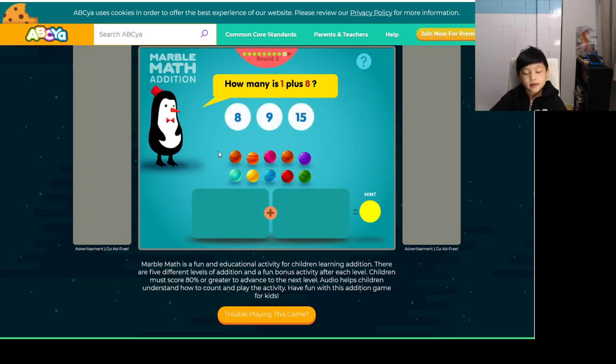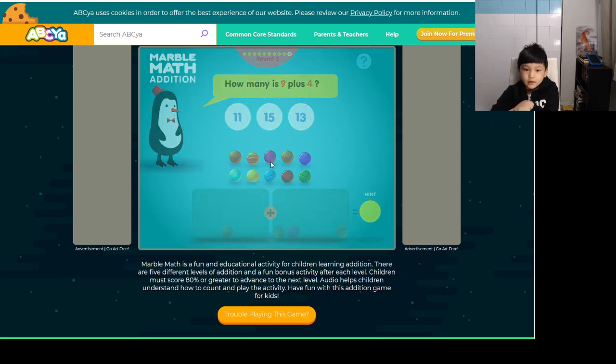And 1 plus 8. Take 8 marbles and add 1 marble. The answer is 9 marbles because 8 plus 1 does equal 9. And then 9 plus 4. Add 1 marble to 9, it becomes 10. And then if you add another 3, it's 10, 1, 2, 3. Then that makes 13 marbles. So the answer is 13.